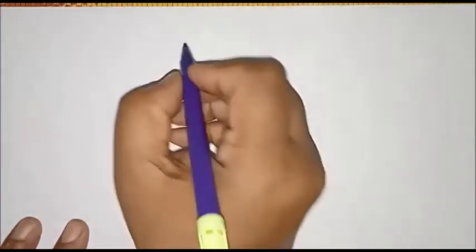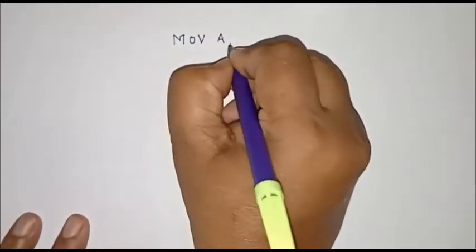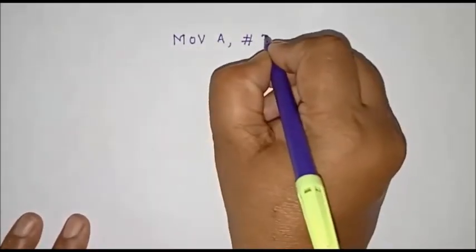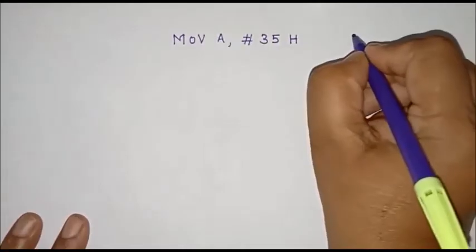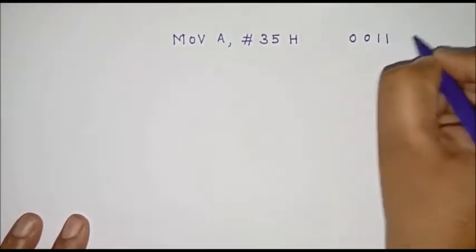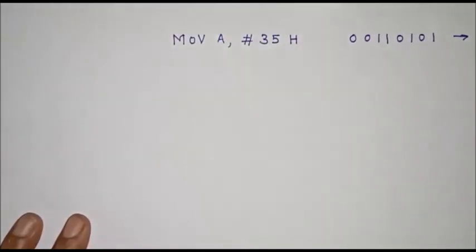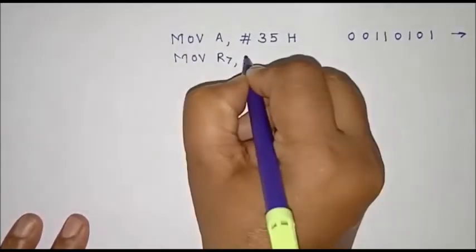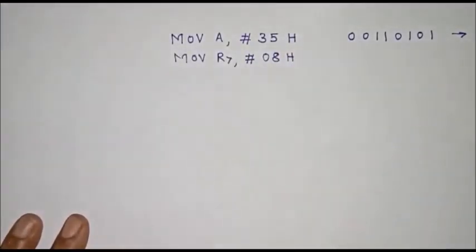Now we'll write the program. First, in the accumulator we'll store the number on which we want to perform this operation — that means count the number of ones. Suppose I use 35H. So 35H in binary gives us 0011 0101. Our result should be 4, meaning register R5 should contain the value 4, as there are four ones. Then we initialize the counter — we are going to use register R7 as a counter. Any other register can be used as a counter.